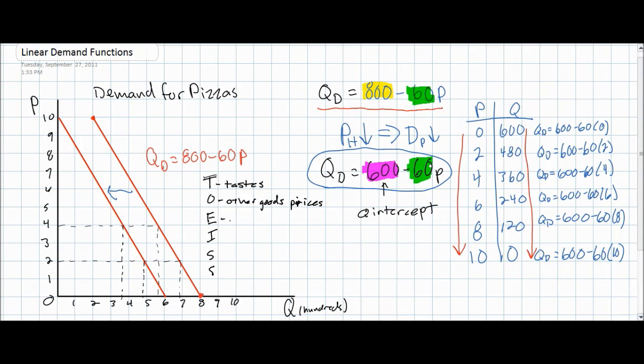E is for the expectations of consumers regarding future prices or future income levels. I is for the current incomes of consumers. S refers to the size of the market regarding the number of consumers in the market, and the other S stands for special circumstances.